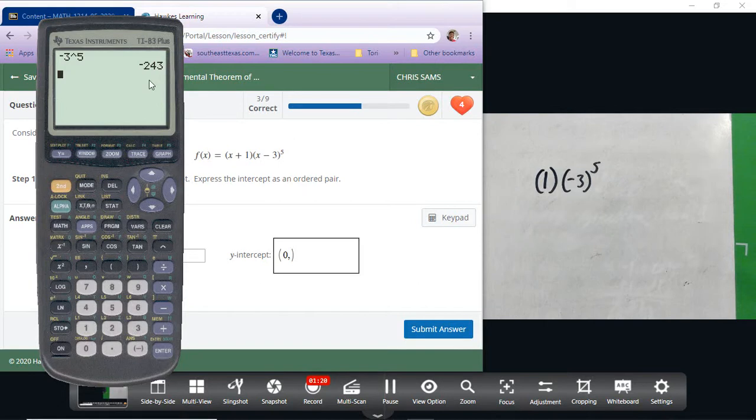So we get negative 243, and we multiply that times one, which is still going to be negative 243.